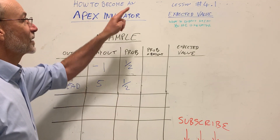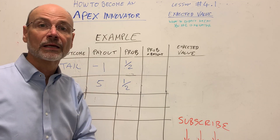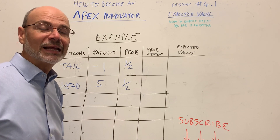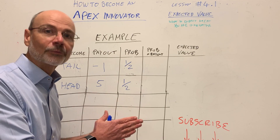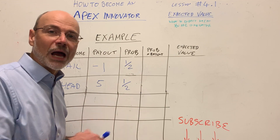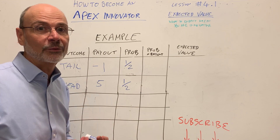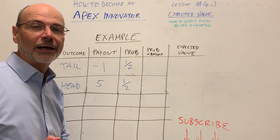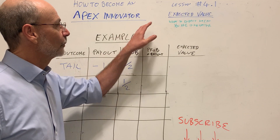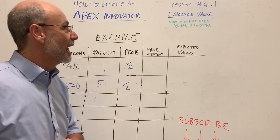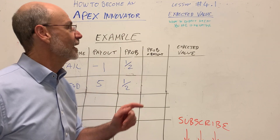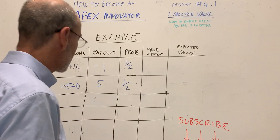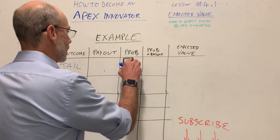Hi, Alberto Savoia here with Lesson 4.1 on how to become an Apex Innovator. I call it 4.1 because I promised you in the previous mini-lesson that I would talk about how innovation is experimentation. But before I explain that, I first have to introduce the concept of expected value. There's a popular book for people who are pregnant called 'What to Expect When You Are Expecting' — great title — and the subtitle of this session is 'What to Expect When You Are Innovating.'